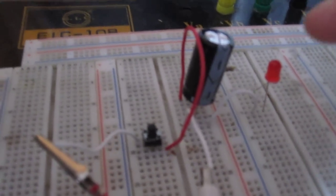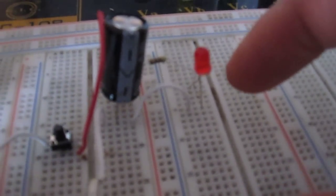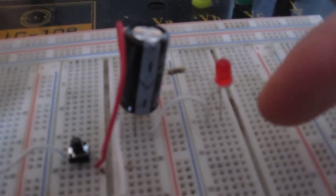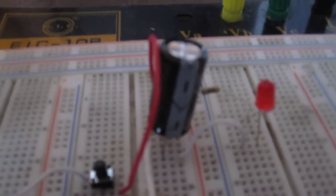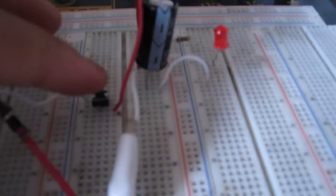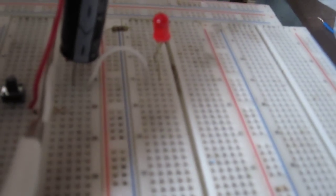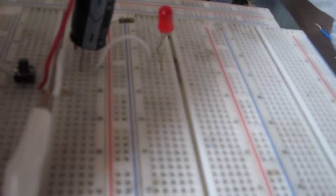I have a 470 ohm resistor just to limit current to the LED, and I have an LED which in this case is our output device. When I press down on the push button, the LED and the capacitor will charge up and the LED will turn on.